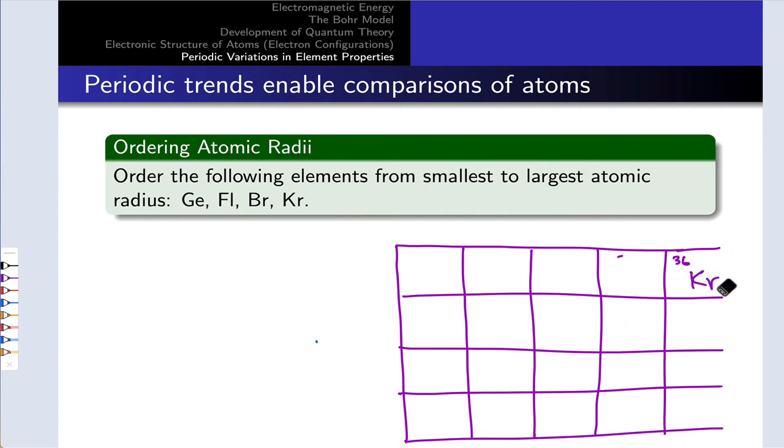Let's lay down the elements we're interested in here on this hypothetical chunk of the periodic table. Krypton is in the upper right, element 36. Bromine is right next to it, element 35. Germanium is a bit further to the left in the same period, element 32. And fluorovium is in the same group as germanium, but way down at element 114. Now that we've laid this down, we need to get a sense of what the periodic trends and atomic radius are.